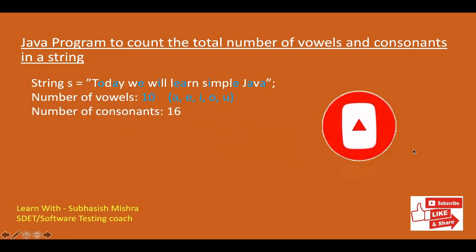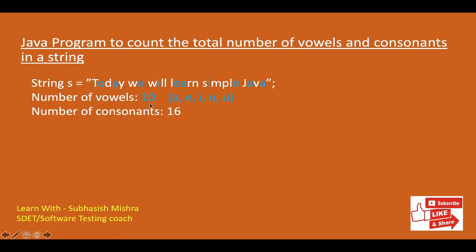So here is our string — 'today we will learn simple Java'. How many vowels are present in this, and how many consonants? We know in English the vowels are A, E, I, O, U. I have highlighted in blue whatever the vowels are. The total number of vowels here is 10, and the total number of consonants here is 16.